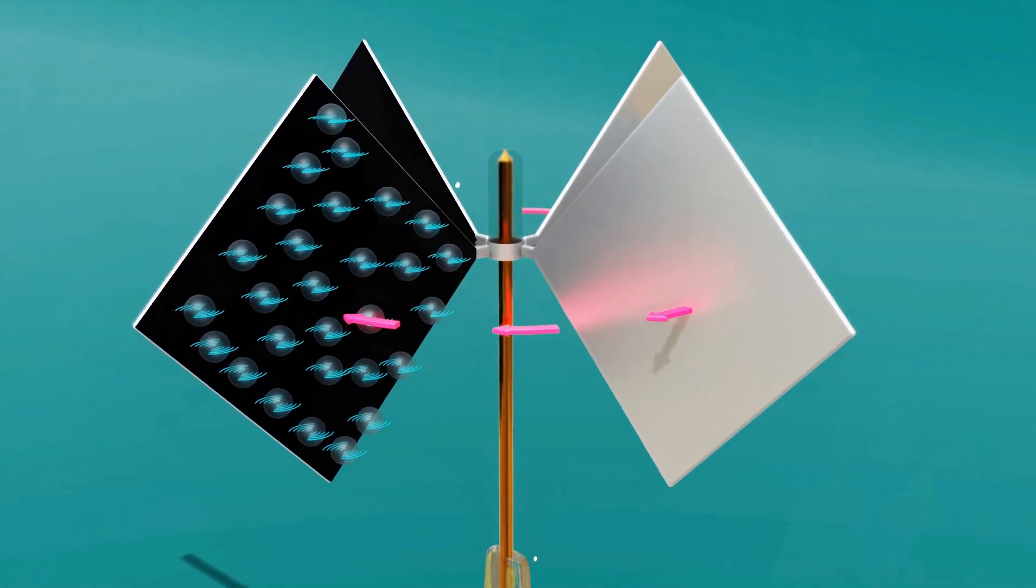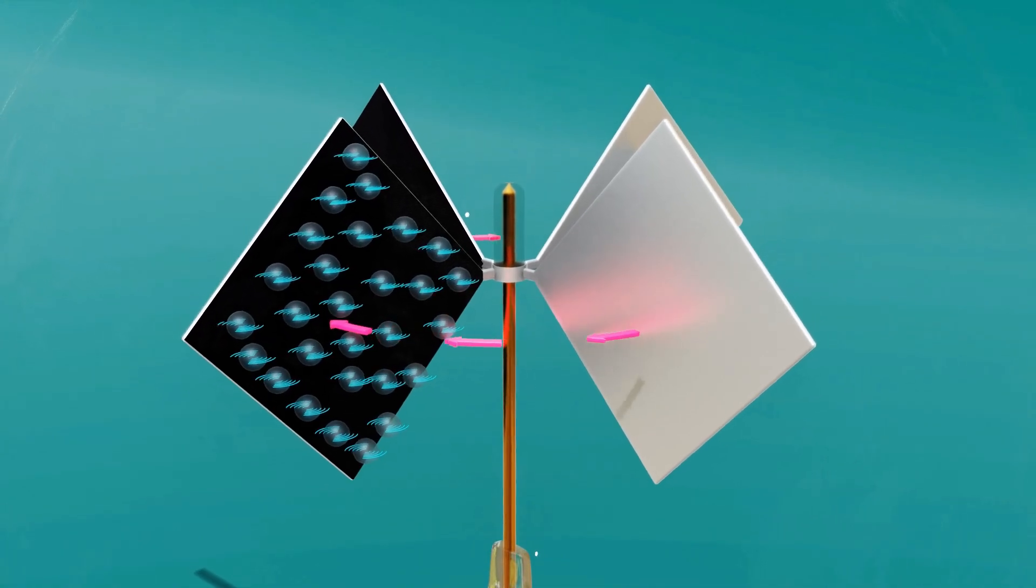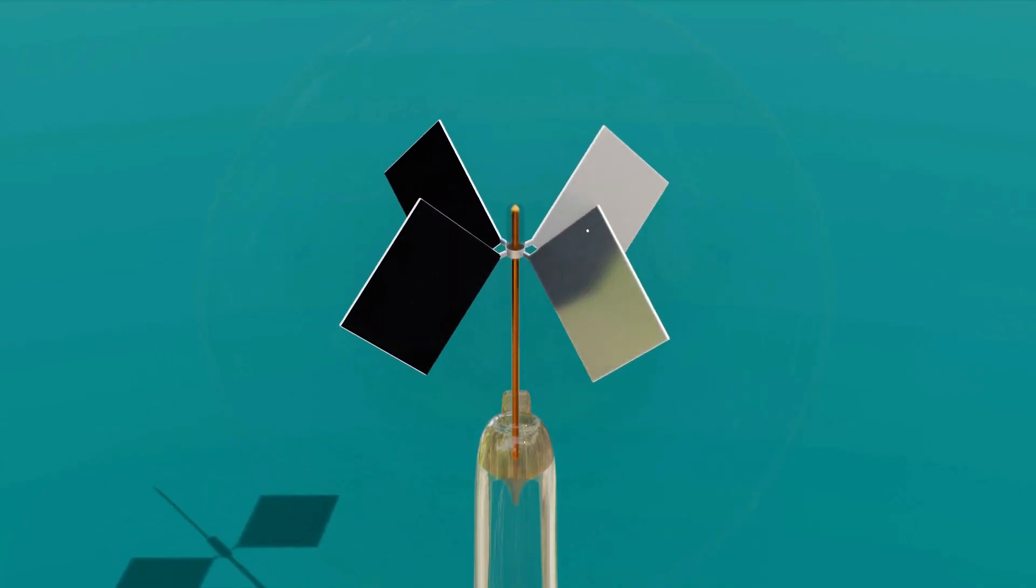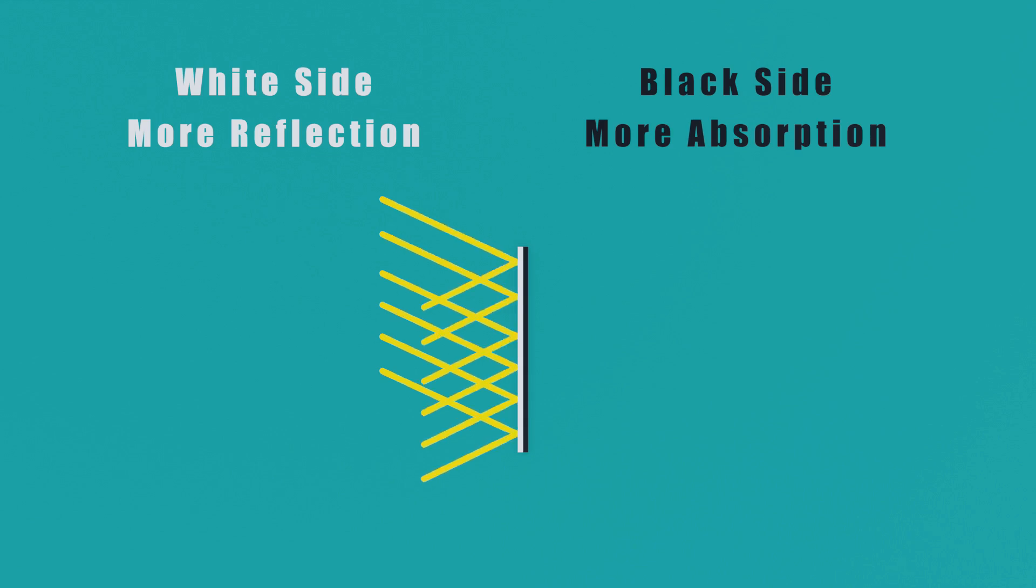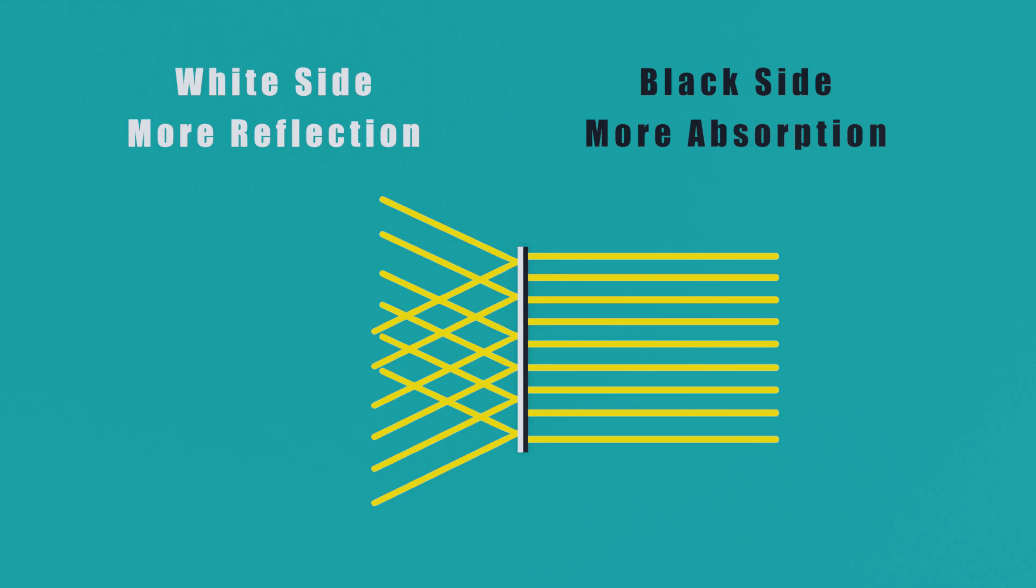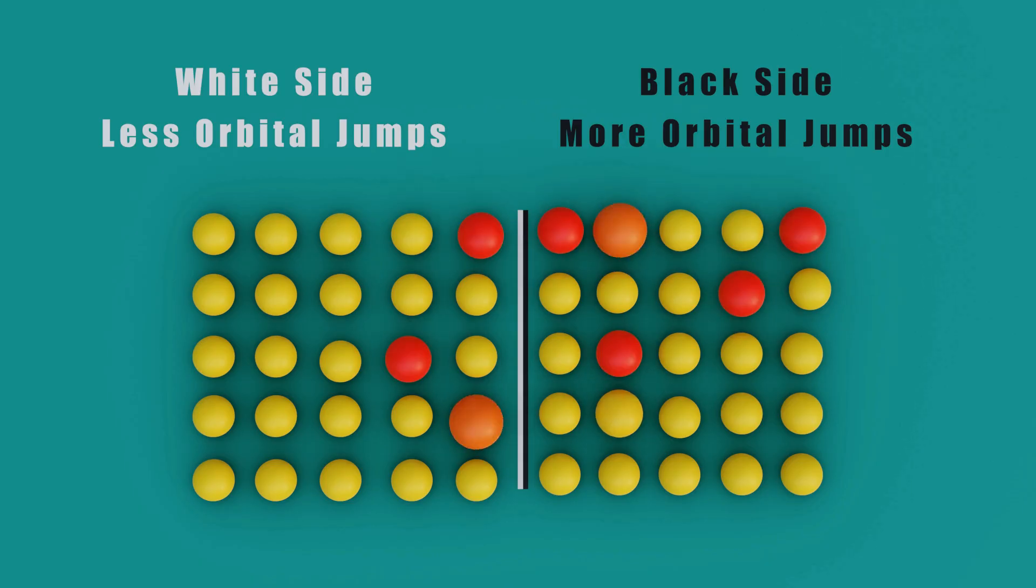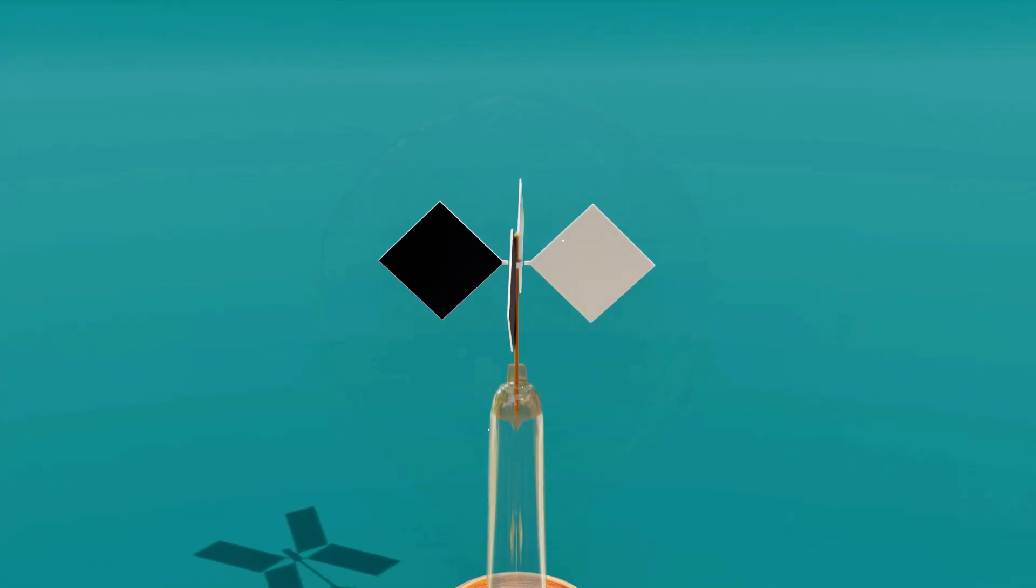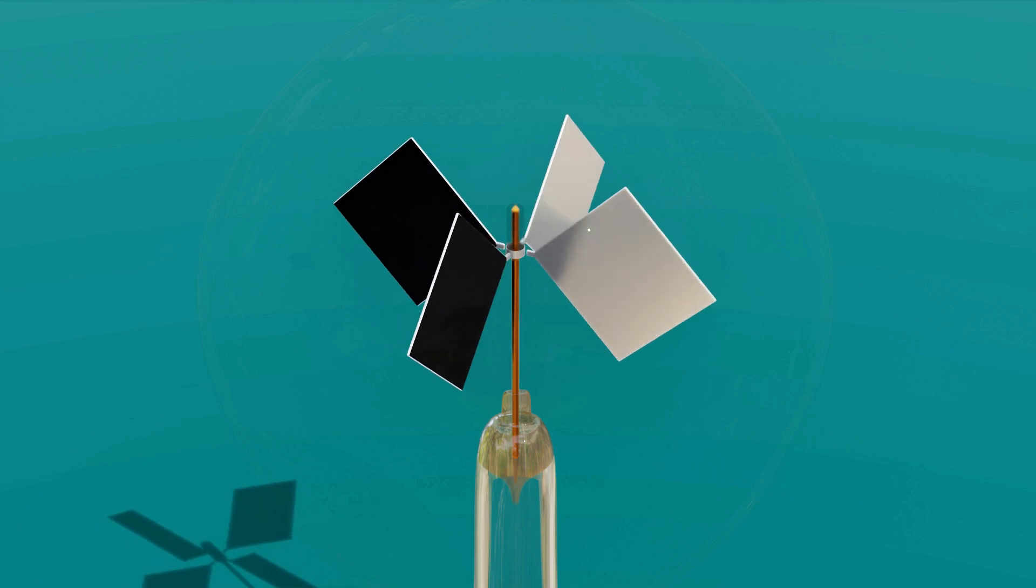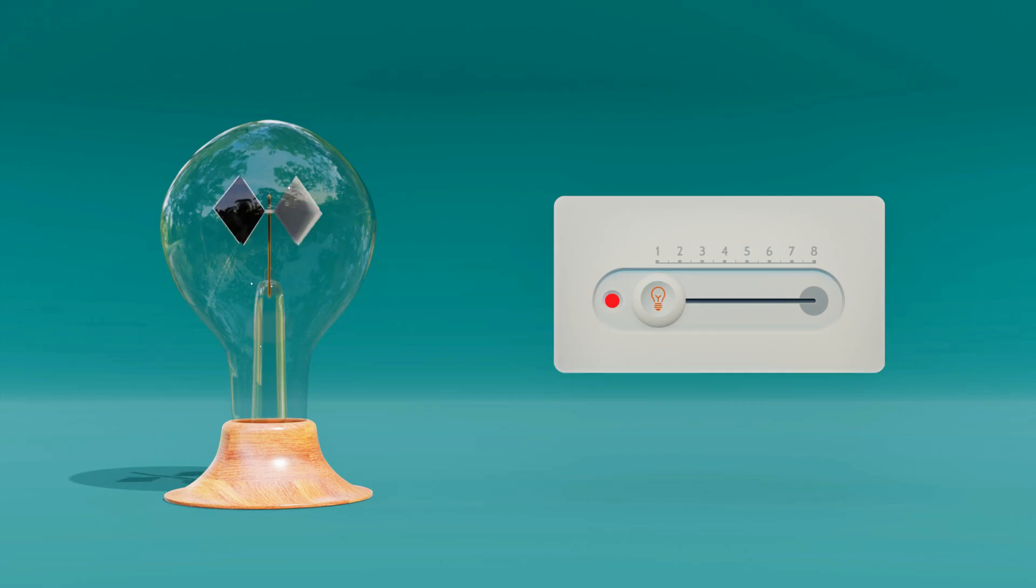So why does the black side always trail behind? The answer lies in how much energy each side absorbs. The black side absorbs more light, which means more gas molecules nearby are undergoing orbital jumps. More expansion, more repulsion, more push. This pushes the veins in a way that makes the black side trail behind. Also, the greater the intensity of light, the stronger the push, and the faster the veins spin.